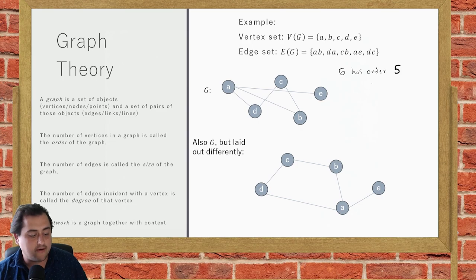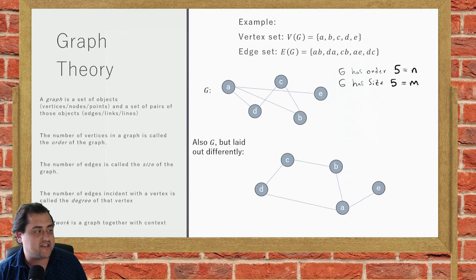There's another set that goes along with the graph - its set of edges. How many edges are there? Also five. We call that the size of the graph. G has size five. Usually we let N be the order and M be the size. That's not strictly always the case or will differ between texts, but typically N stands for the order and M for the size.